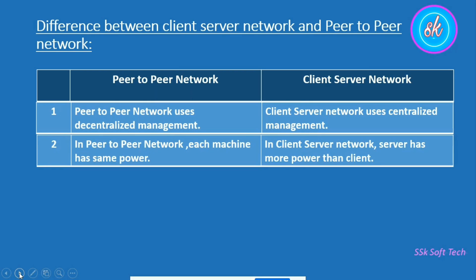The second point is that in a peer-to-peer network, each machine has the same power. Each machine acts as a client as well as a server, so each machine has the same power. But in a client-server network, the server has more power and the client has less power. All resources are managed by the server machine, so the server has more power than the client.